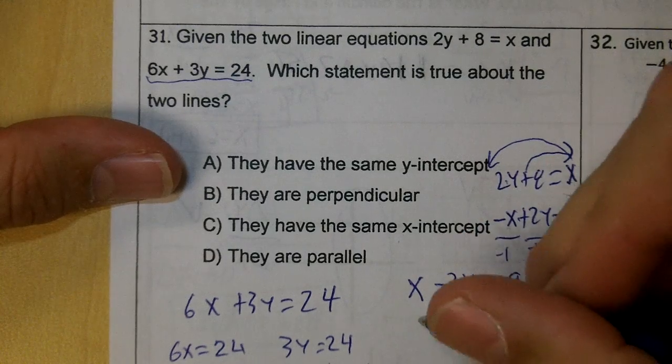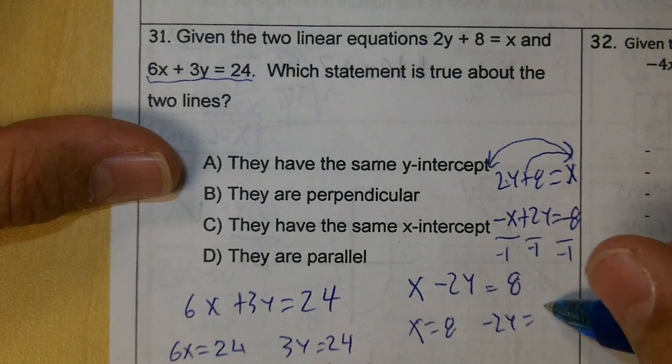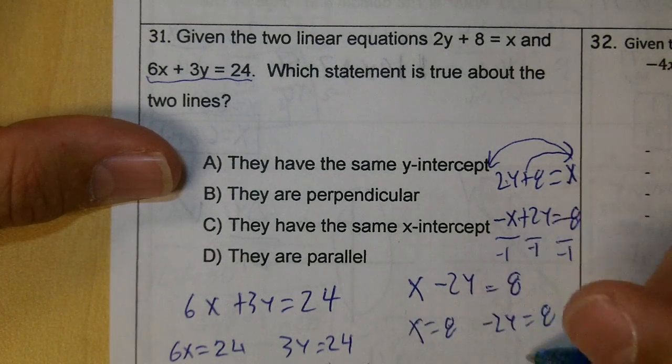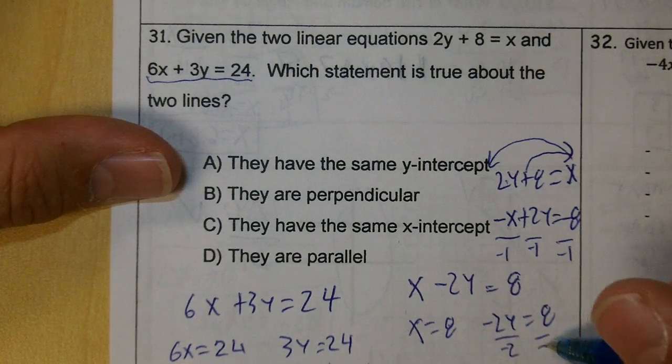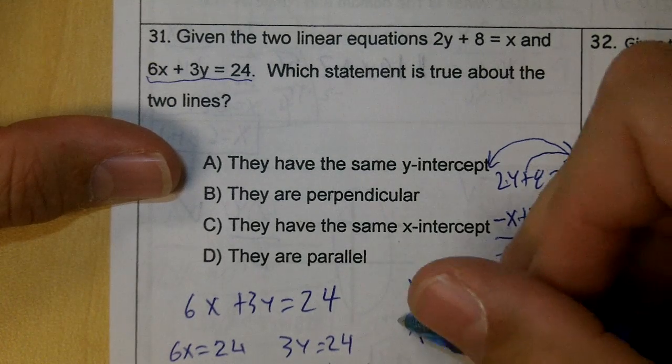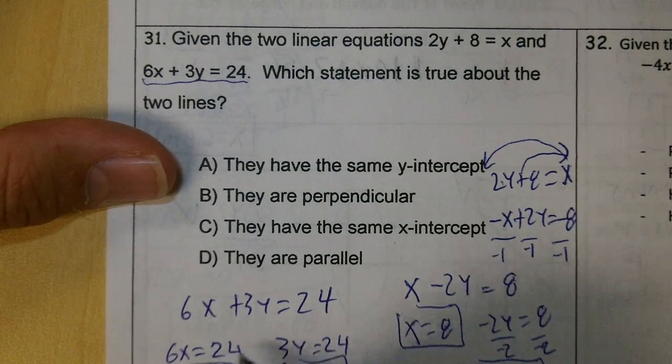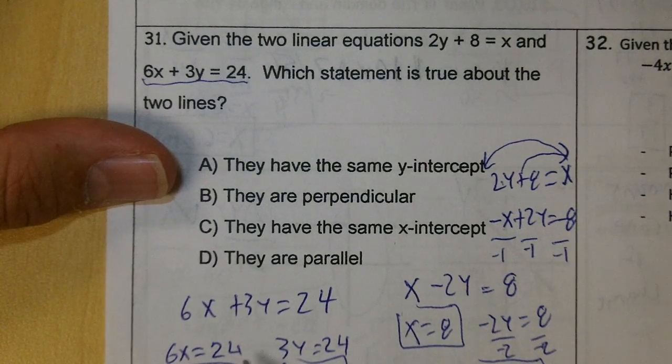Let's find the intercepts of this one. x would end up being 8, and negative 2y would end up being 8. x is already solved right here. If you divide by negative 2, y would end up being negative 4. So we're going to box in our intercepts. Are any of the intercepts the same? They're not, are they?